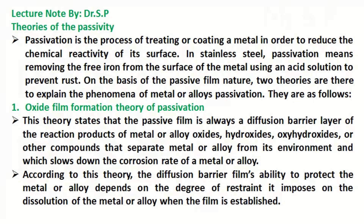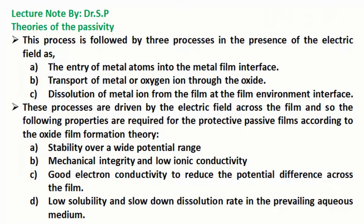According to this theory, the diffusion barrier film's ability to protect the metal or alloy depends on the degree of restraint it imposes on the dissolution of the metal or alloy when the film is established. This process is followed by three processes in the presence of the electric field: the entry of metal atoms into the metal film interface, transport of metal or oxygen ions through the oxide, and dissolution of metal ions from the film at the film-environment interface. These processes are driven by the electric field across the film.